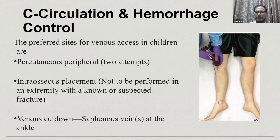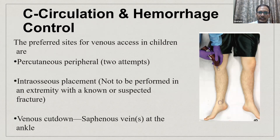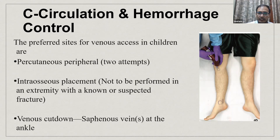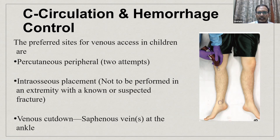For circulation and hemorrhage control: auscultate for heart sounds, check femoral artery pulses and peripheral arteries including dorsalis pedis. Look for cold, clammy peripheries or pale extremities suggesting circulatory compromise. Get venous access immediately — preferred sites are peripheral veins like the antecubital fossa or saphenous vein. In a trauma situation, if two attempts at IV access fail, do not waste time on venous cutdown, which takes 5-10 minutes. We don't have that much time in emergency.